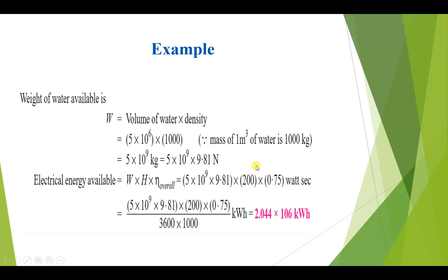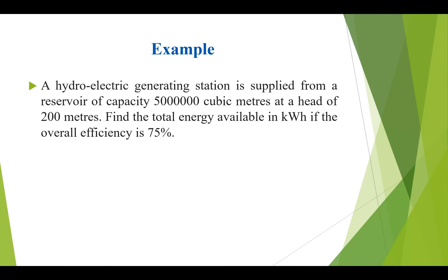Since the result is in watt-seconds, we need to convert to kilowatt-hours — dividing by 1000 to convert watts to kilowatts and by 3600 to convert seconds to hours. By simplification we get 2.044×10⁶ kilowatt-hours. This is the total energy available for the hydroelectric station with a reservoir capacity of 5×10⁶ m³, a head of 200 meters, and 75% efficiency.